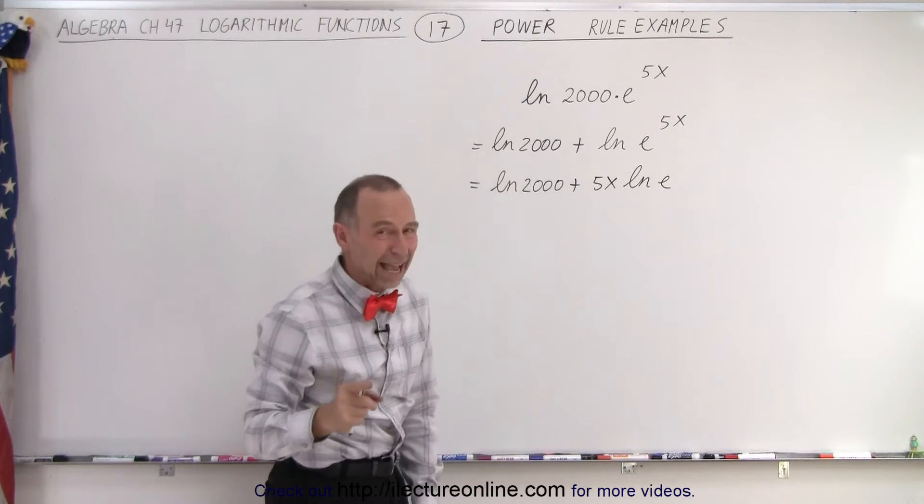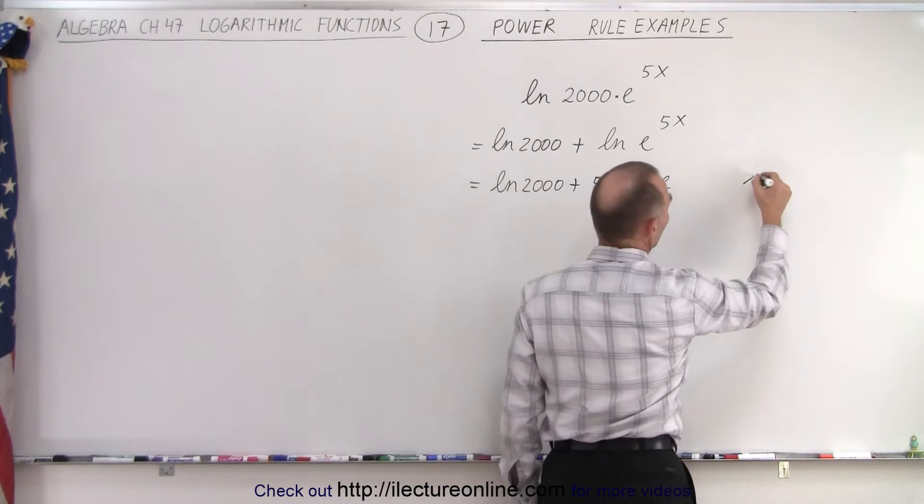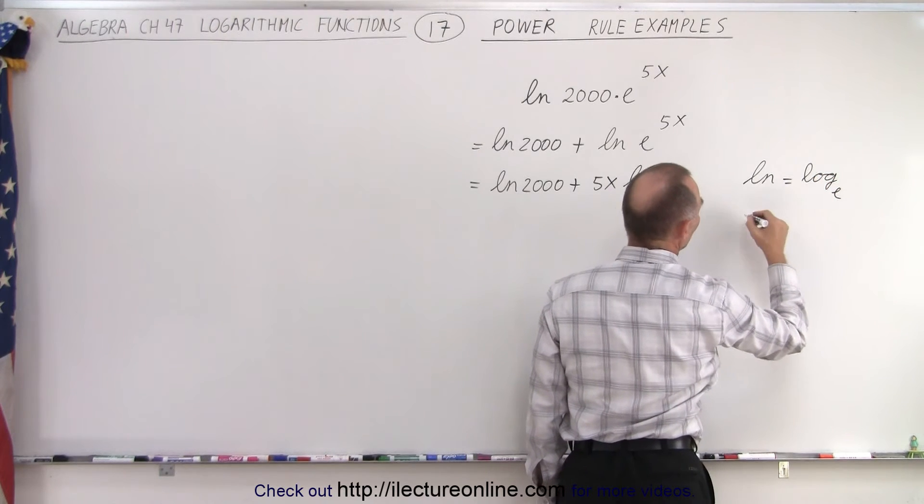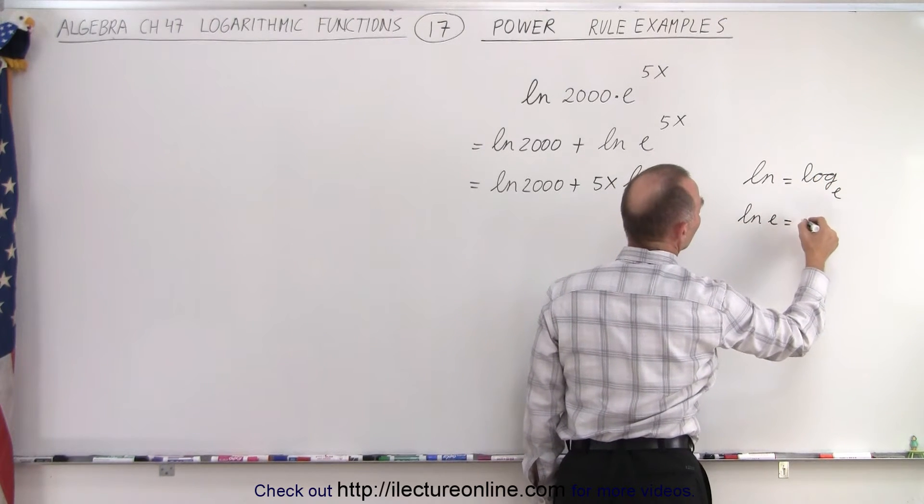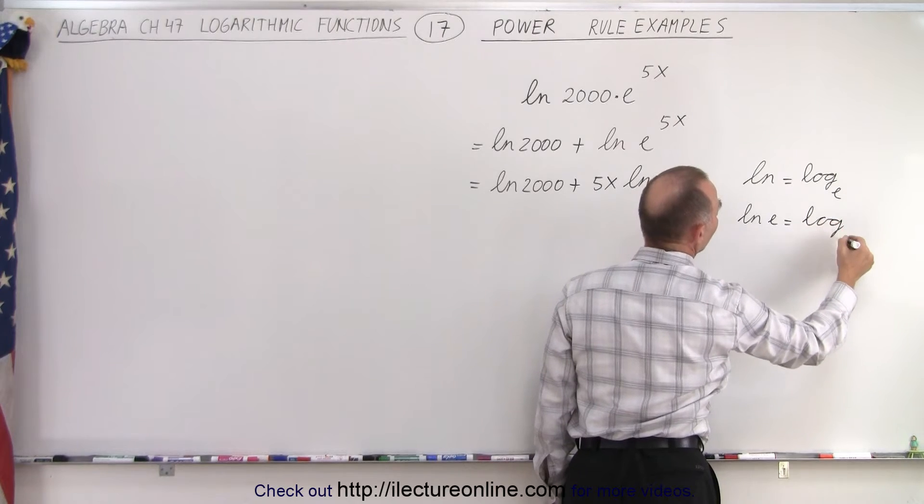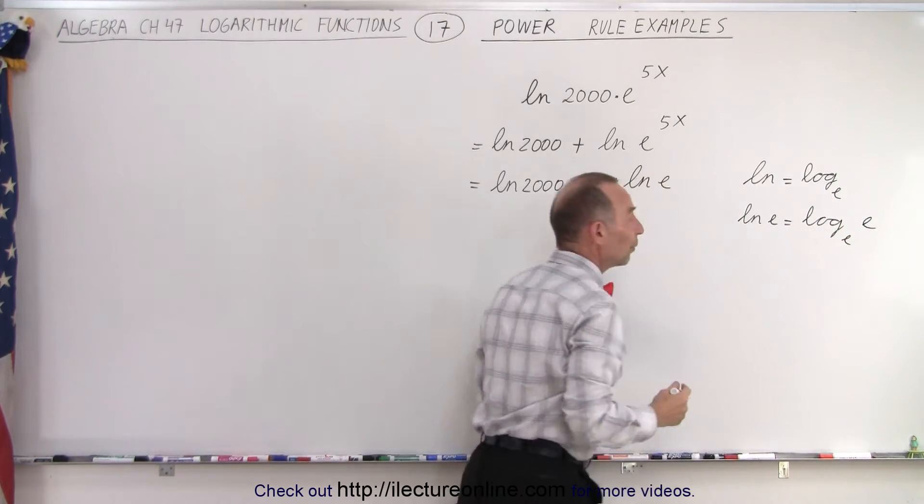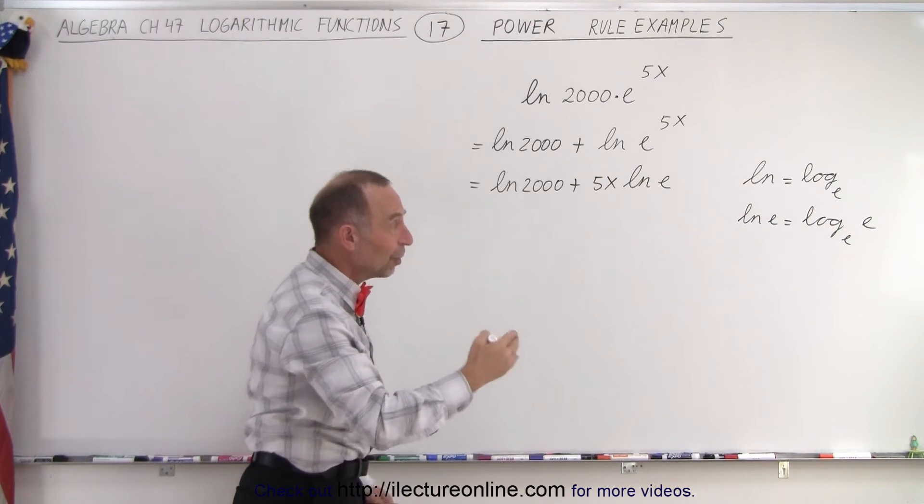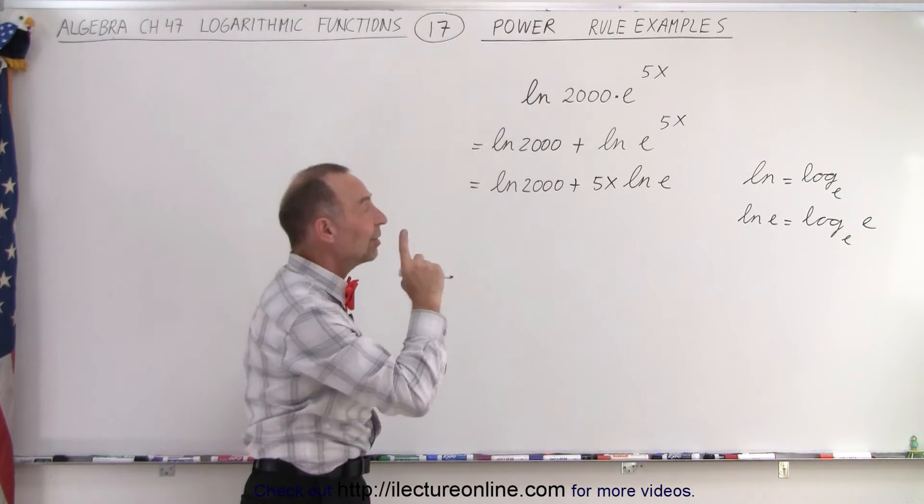Now remember that the natural log is equal to the log of base e. And if we take the natural log of e, that is equal to the log base e of e. And whenever you take the log with the base of a number which is equal to the base, that is equal to 1.